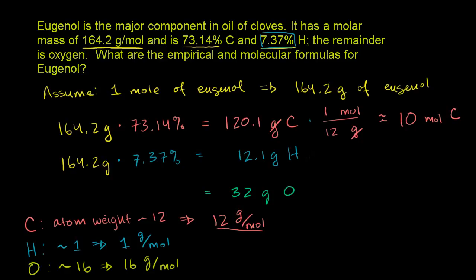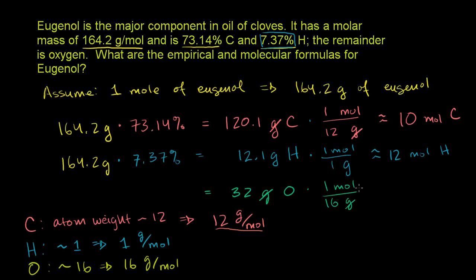For hydrogen: since its molar mass is 1 gram per mole, 12.1 grams is essentially 12.1 moles — and since we're looking for whole-number formulas, that's 12 moles of hydrogen. For oxygen: 32 grams divided by 16 grams per mole equals 2 moles of oxygen. So in one mole of eugenol, we have 10 moles of carbon, 12 moles of hydrogen, and 2 moles of oxygen.